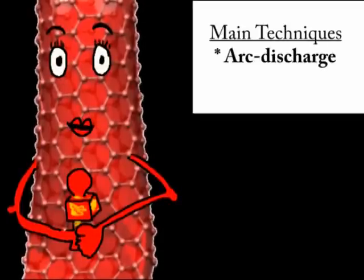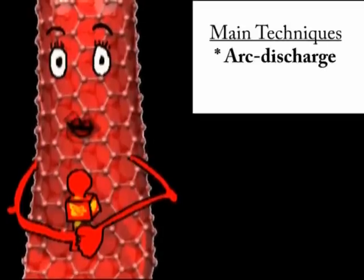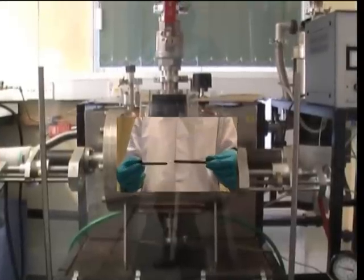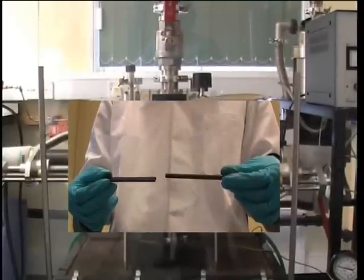There are two main techniques. The first one to be used was arc discharge. This is the chamber for the arc discharge, which is filled with an unreactive gas. Inside, two rods of graphite will be placed and we will apply a current.